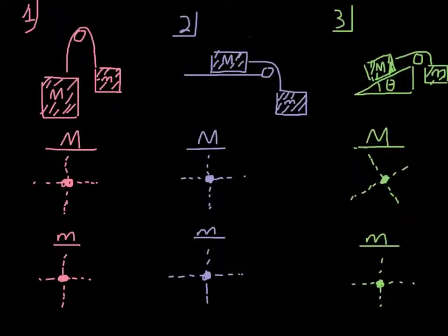I wanted to tackle the idea of two objects connected by a string in a system, and how to draw free-body diagrams for those. As I've said multiple times, the free-body diagram in Newton's second law problems is where you live and die. If you get the free-body diagrams right, the rest is pretty much just algebra.